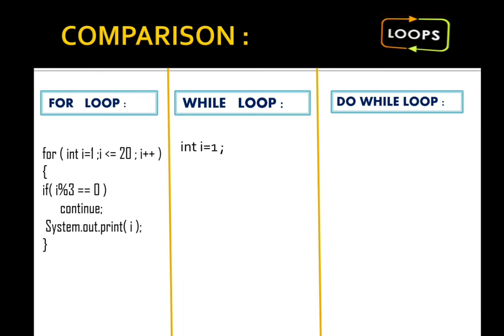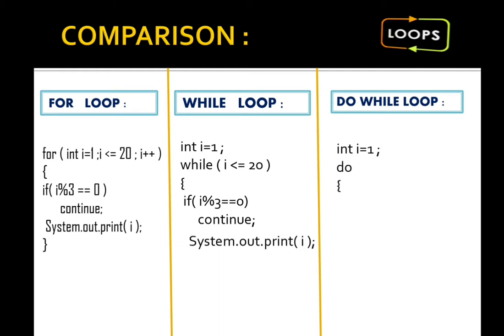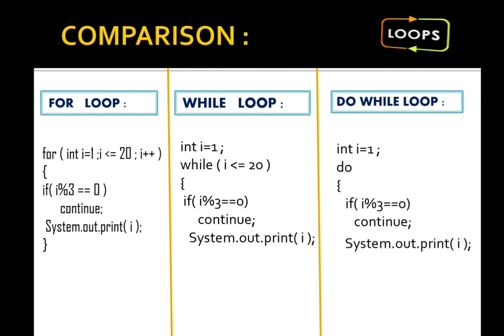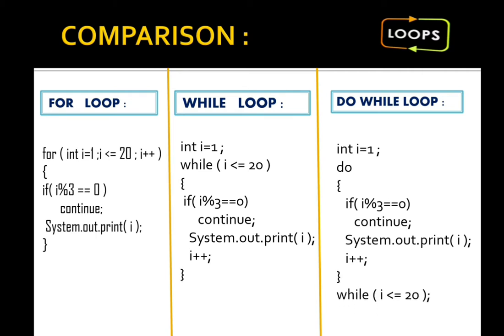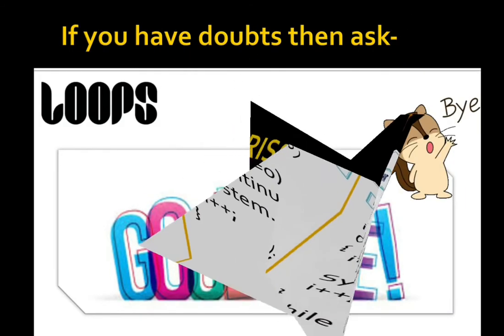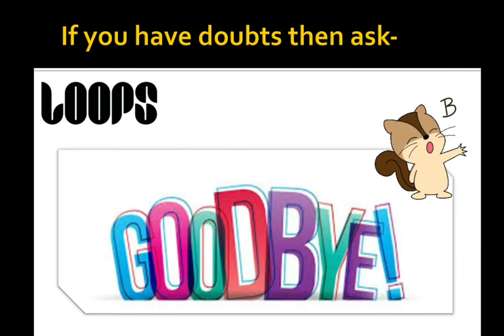For the while version, we initialize before the loop, place the while condition, write the same body inside curly braces, and put increment inside. For do-while, the body executes first, then the while condition is checked at the end. This shows how to convert a for loop to while and do-while. If you have any doubts, consult me — otherwise goodbye and good luck.